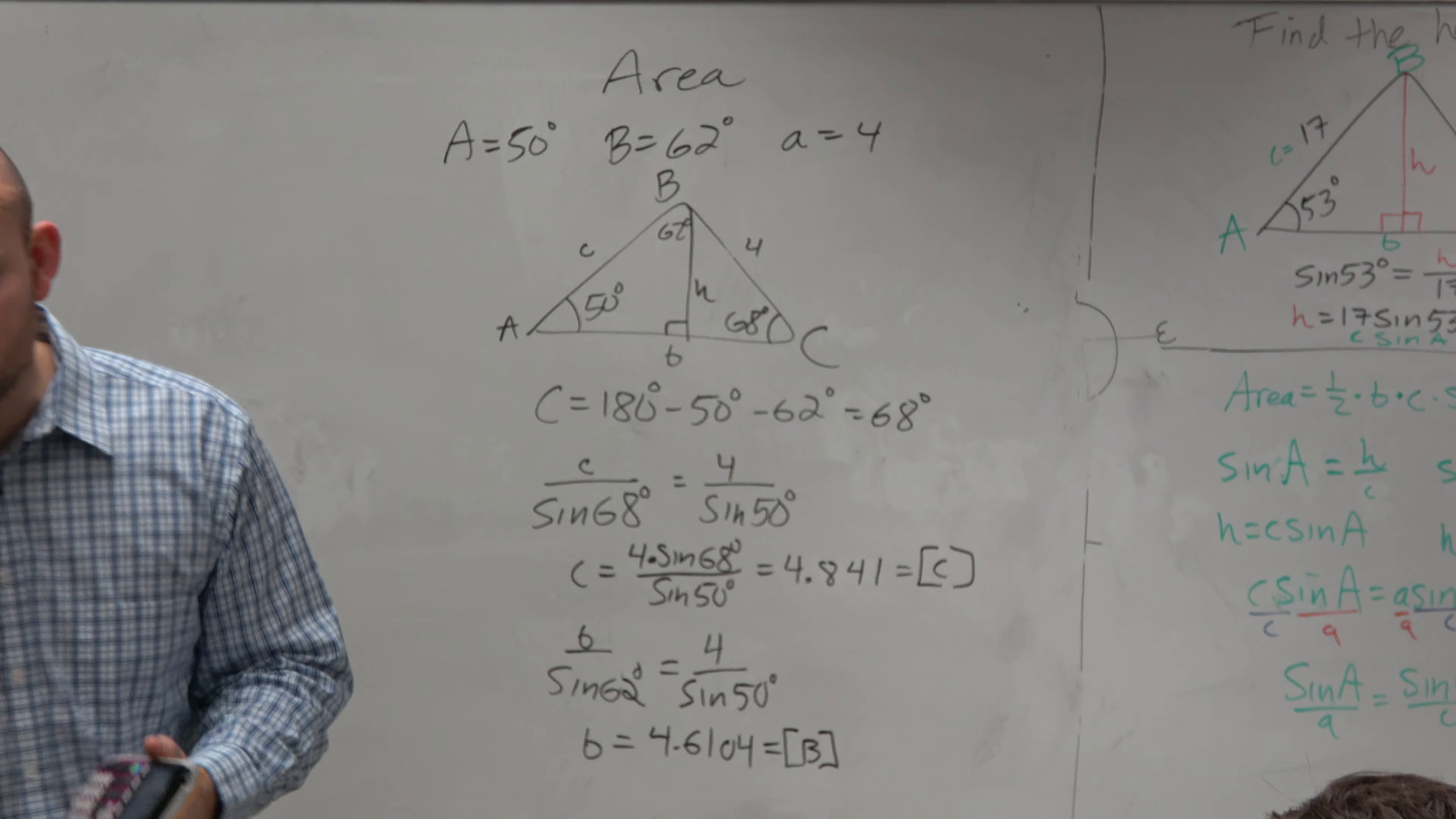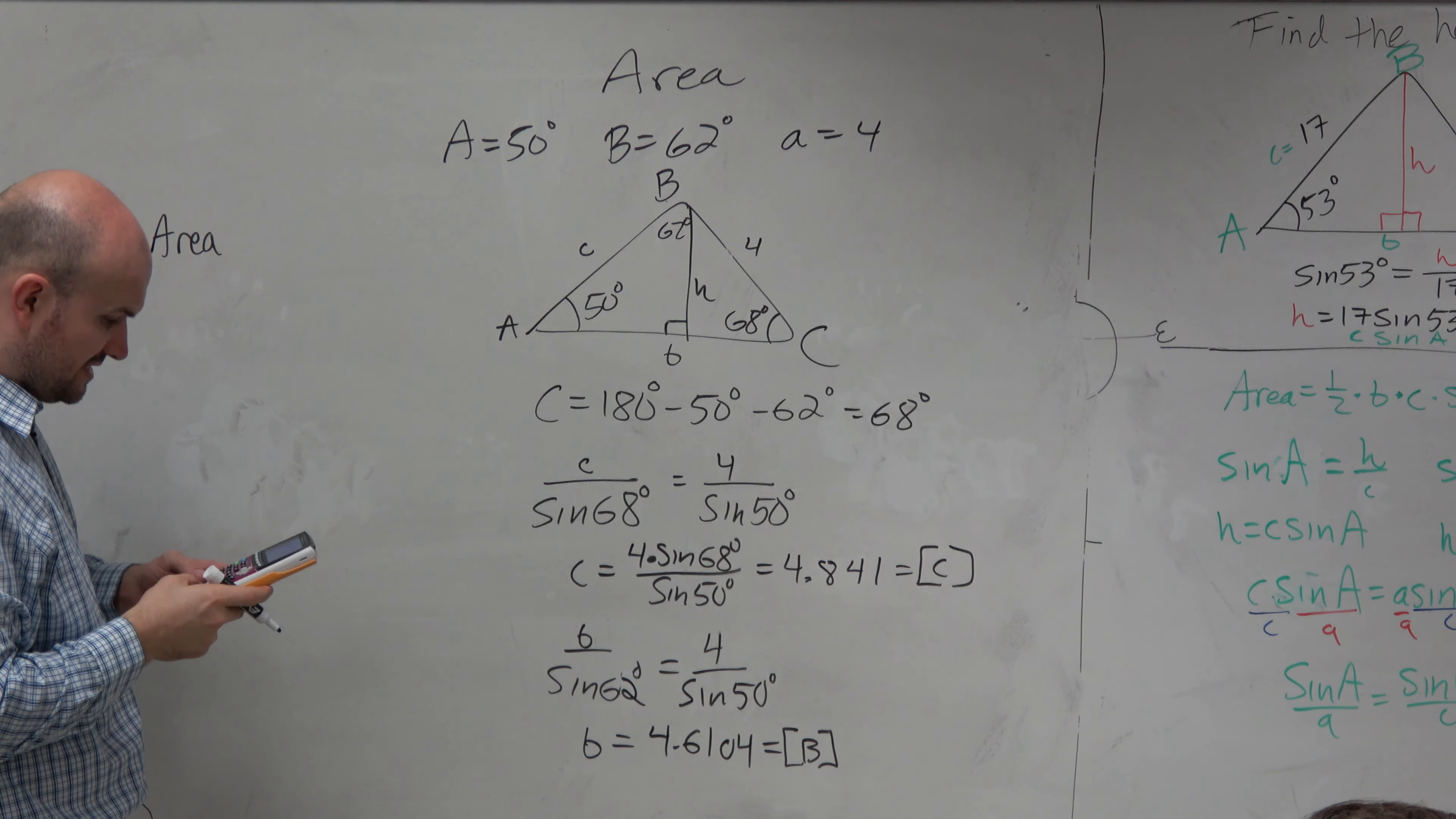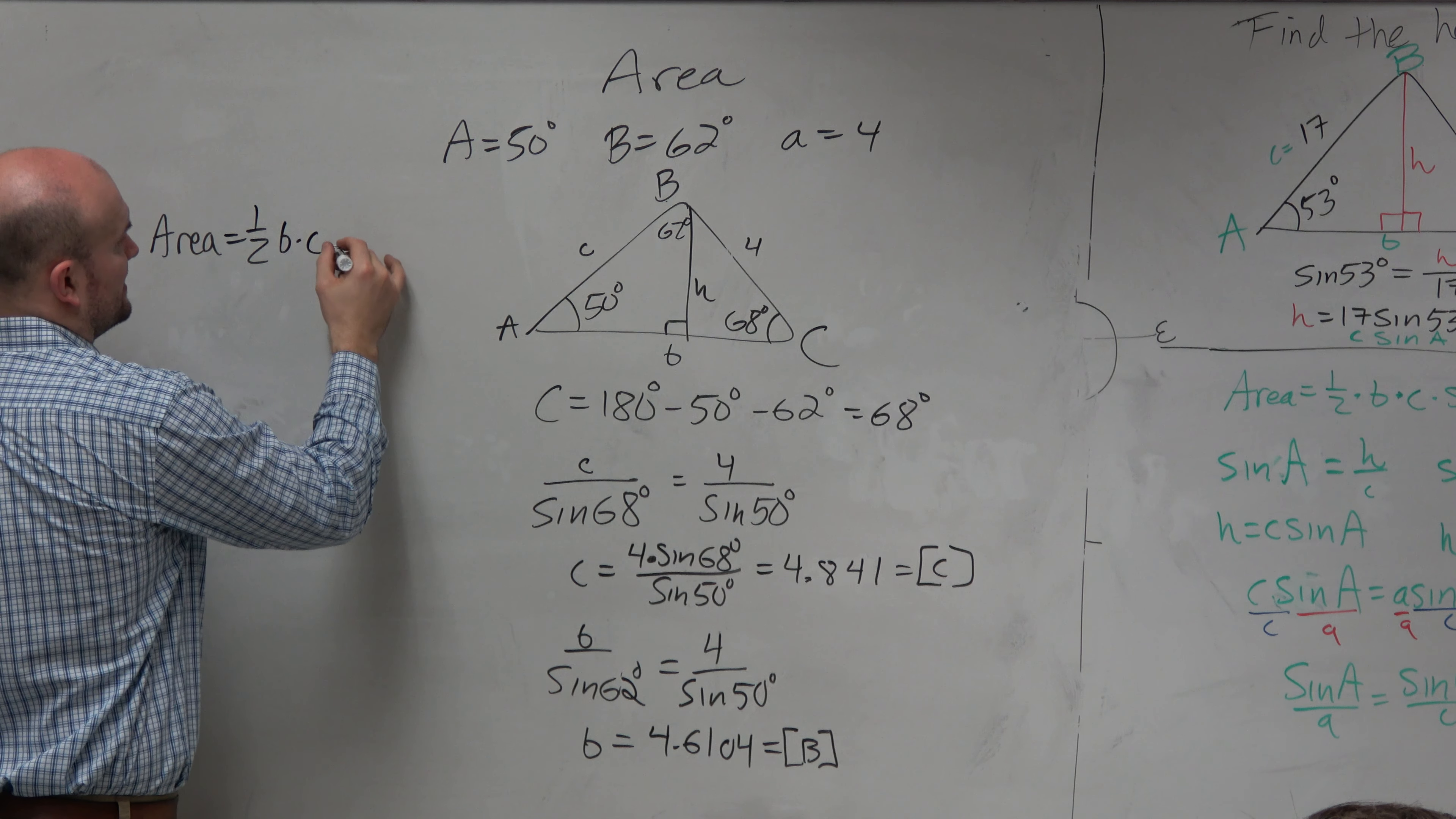And again, guys, the reason why this is so important is because you're typing these all into a formula. Like the area, so let me store this, actually. Store as alpha B. And I didn't do the other one, so let me type that again. 4 times sine of 68 divided by the sine of 50. And let's store that as alpha C. OK.